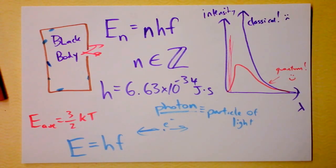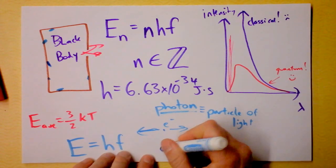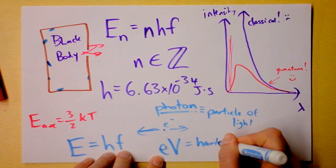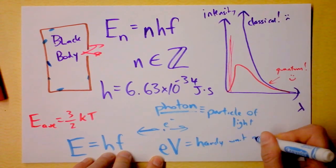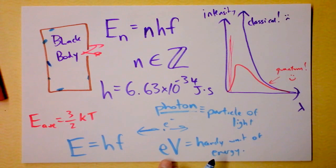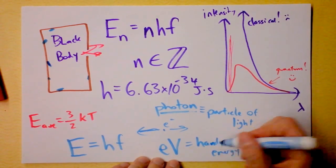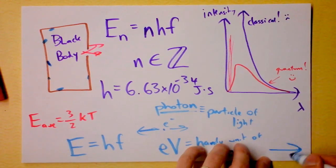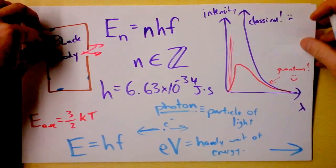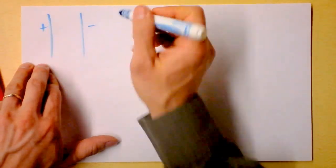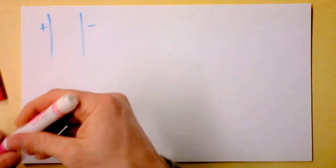I wanted to find one more thing: an electron volt. An electron volt is a handy unit of energy. An electron volt is the kinetic energy that an electron has if you accelerate it through a potential of one volt. Let's do a quick calculation of what one electron volt is.